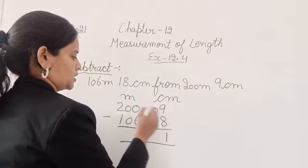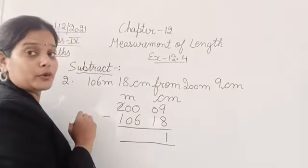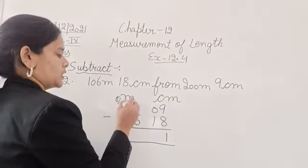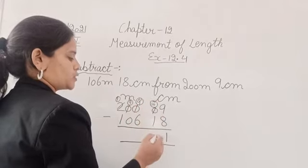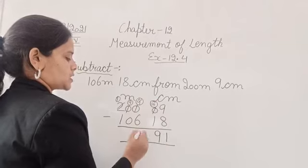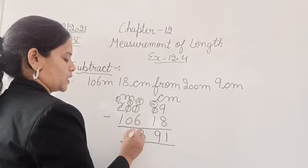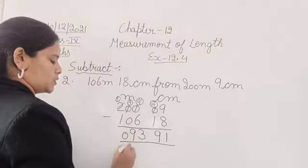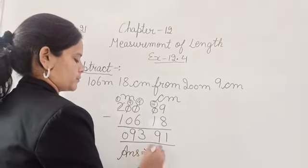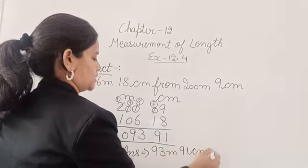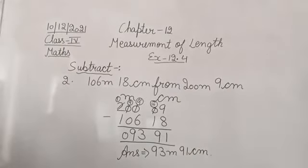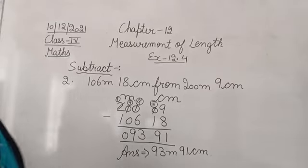Now let's subtract. 9 minus 8 is 1. The hundreds column has zeros, so it will borrow, this will become 1, that will become 9, 9, and this will become 10. 10 minus 1 is 9. 9 minus 6 is 3. 9 minus 0 is 9. 1 minus 1 is 0. So the answer is 93 meter 91 centimeter. You can pause it here and note it down in your notebooks.